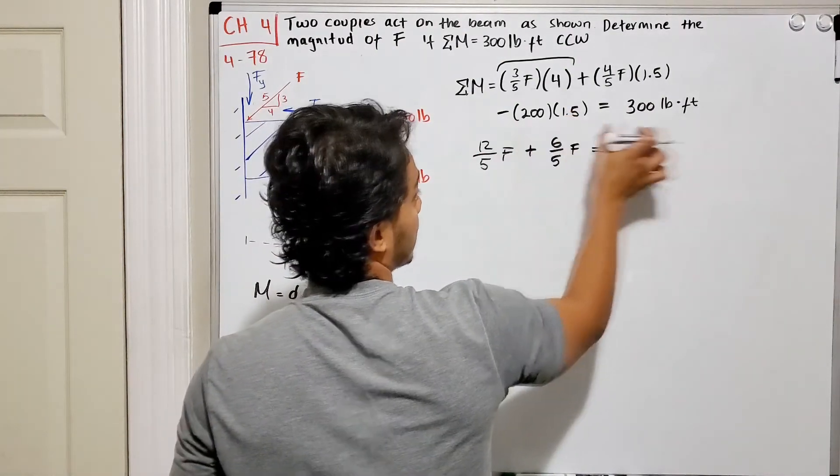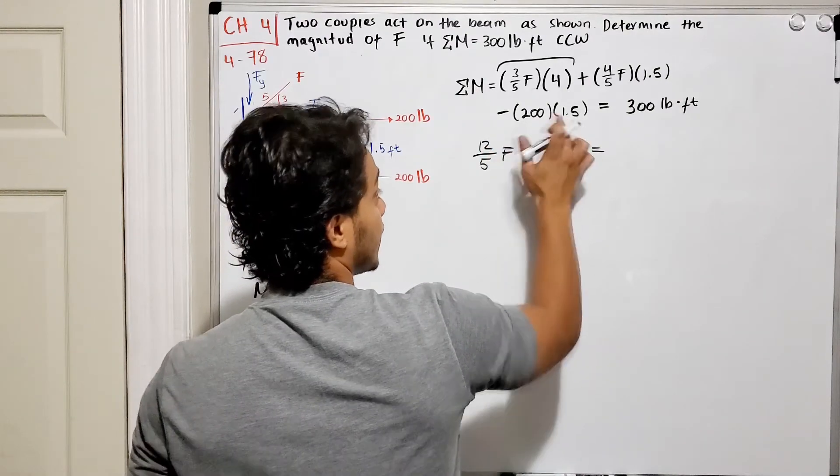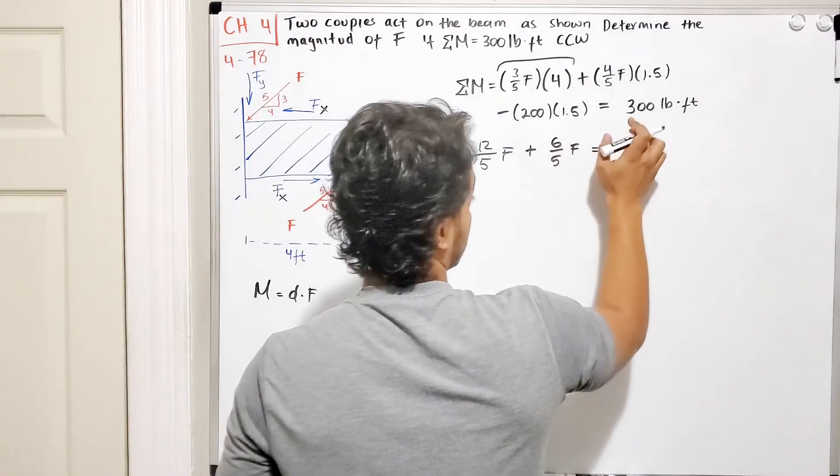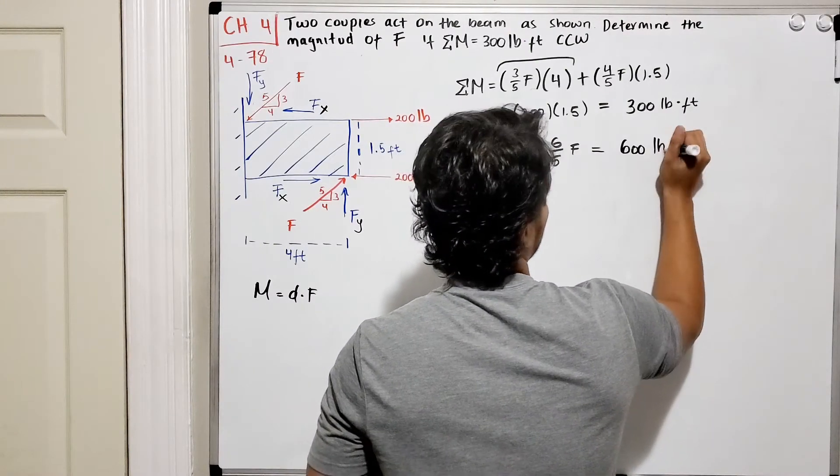We do equal. Now if we multiply 200 multiplied by 1.5, it's equal to 300, and if we do 300 plus 300, it's equal to 600 pounds-feet.